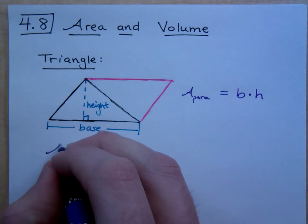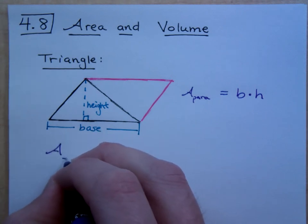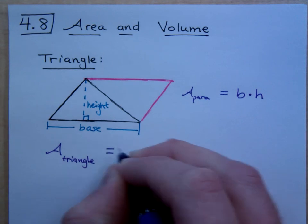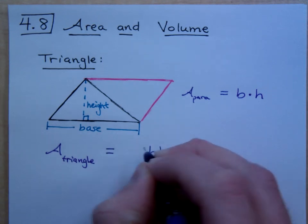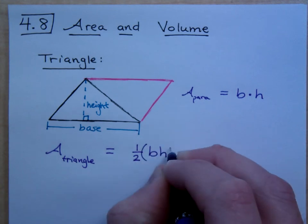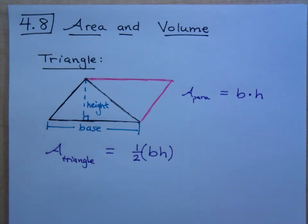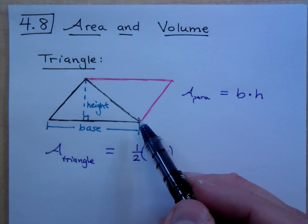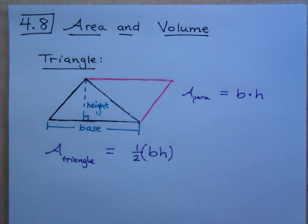So, that's why when we talk about the area for a triangle, the area for a triangle is not base times the height, but it's half of that. Because it's half of this parallelogram. Can you guys see that?